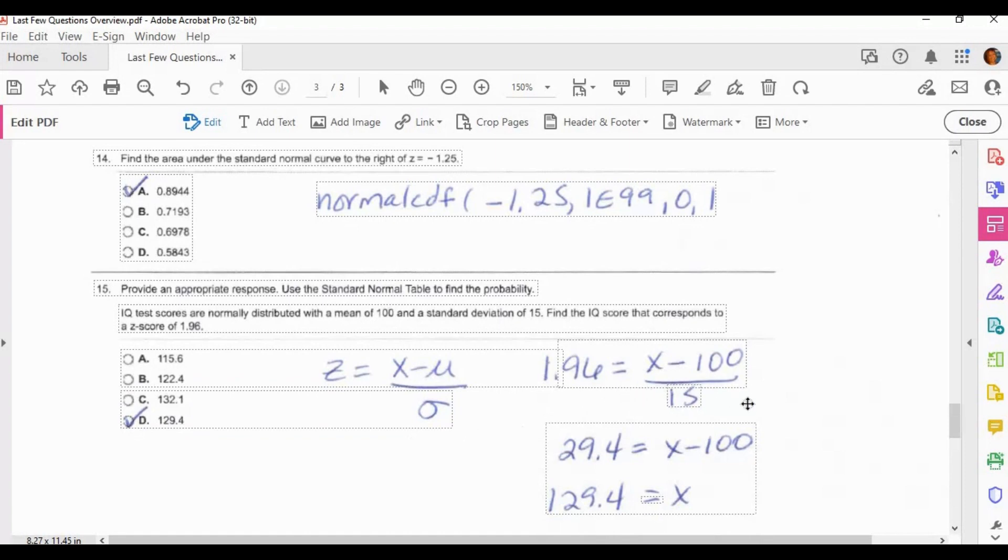When I did that, I multiplied through by 15. That gave me 29.4 equals x minus 100. And then I just added 100 to both sides to get my x equals 129.4, which is my answer, D, 129.4.